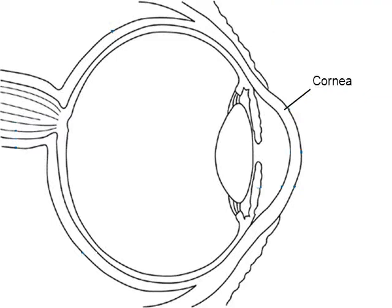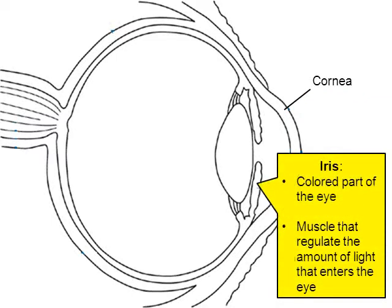The next part of the eye I want to mention is called the iris. This is the colorful part of the eye — the pretty part that's hazel, blue, or green. The iris is simply a muscle. One thing that all muscles can do, whether it's a muscle in your eye or a muscle in your leg, is stretch and contract.